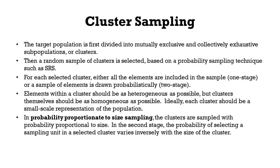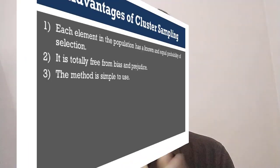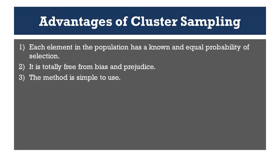The biggest advantage of cluster sampling is that it is totally free from bias and prejudice, and it is representative of the population. Each element in the population has a known and equal probability of selection. Even though it can be difficult to administer, the results are much more accurate.